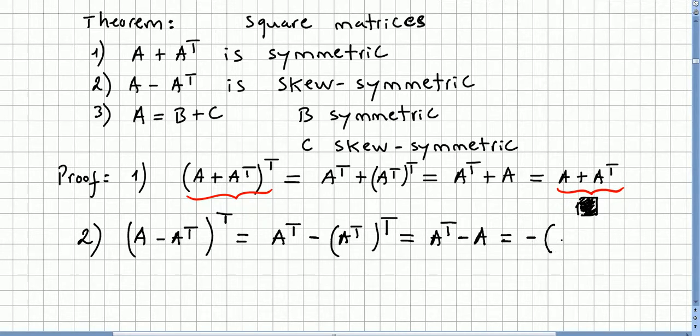So the transpose of the subtraction is equal to minus the subtraction, right? So A minus A transpose is skew-symmetric. That concludes the proof.